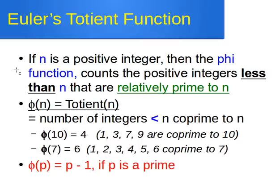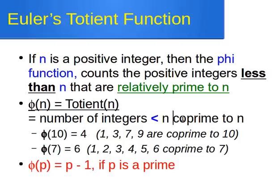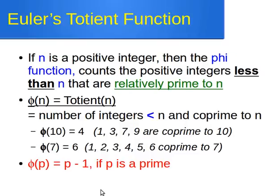In that video I said that Euler's totient function, or the phi function, counts the positive integers less than or equal to n that are relatively prime — or co-prime — to n. Actually, the correct definition is that the phi function counts the positive integers less than n (not less than or equal) that are co-prime to n. So the phi function is the number of integers less than n and co-prime to n.